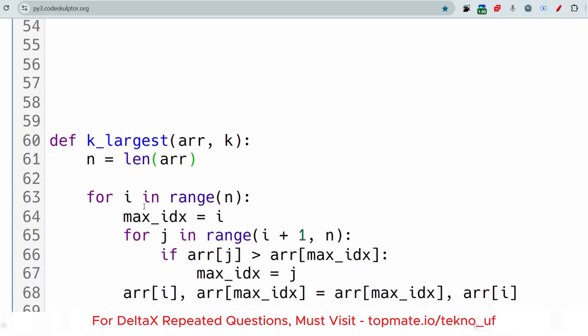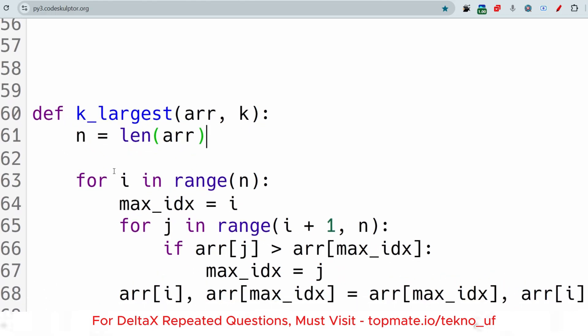Then we are running a for loop to sort the array in descending order. At first, we are guessing the first element, first index. Let me share that.